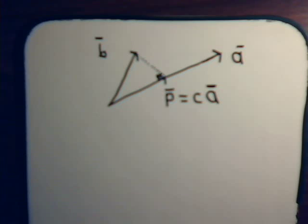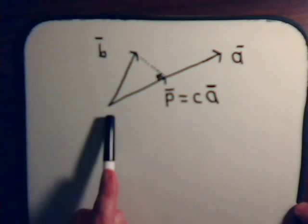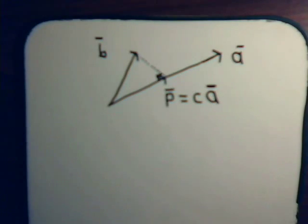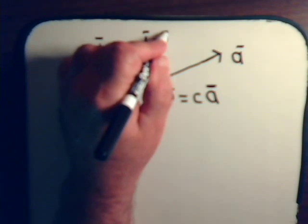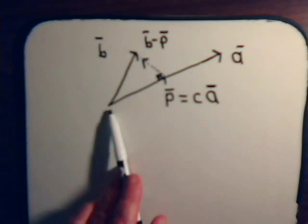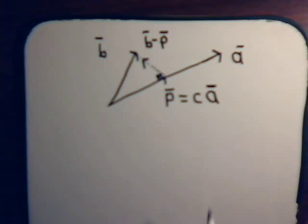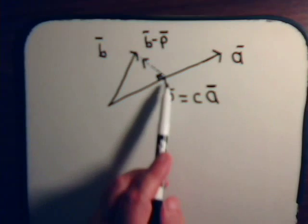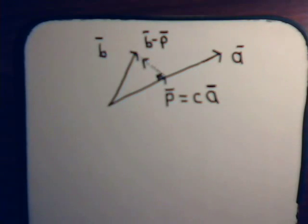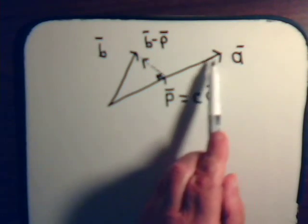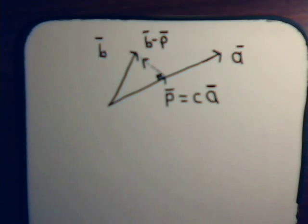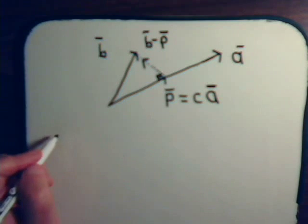From a vector point of view: if this is vector P and this is vector B, then the vector that points in the remaining direction is B minus P. P is in this direction, B is in this direction, so B minus P is in this direction. We've subtracted this component and the component we have left is this component — and we know that this vector B minus P is orthogonal to our vector A.